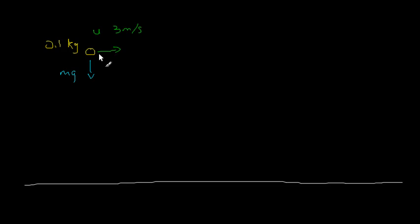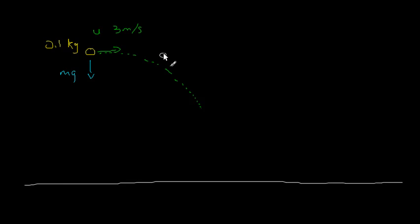So the ball flies — it starts off horizontally, then the path curves downwards while at the same time moving to the right. Let's think about what happens after a short time, say after 0.4 seconds. The ball comes here after 0.4 seconds and now it has a velocity pointing in a slanted direction.